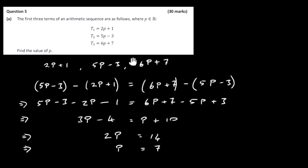You don't have to do this in the exam, but just to check: put 7 in for P. We get 2 times 7 is 14, plus 1 is 15. Put 7 in the second term: 5 times 7 is 35, minus 3 is 32. Put 7 in the third term: 6 times 7 is 42, plus 7 is 49. We're going up by 17 each time — 15, 32, 49 — so that works perfectly.